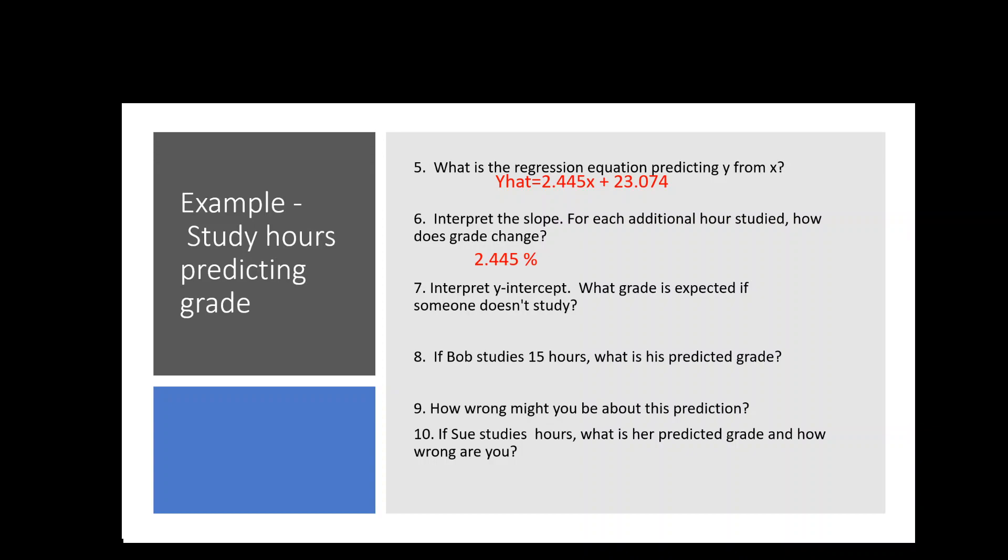Now we're going to interpret the y-intercept. So what grade can we expect if someone didn't study at all? In other words, we're going to be setting x to zero. That's the definition of our y-intercept. So we're basically saying you would get roughly about 23.074% on the test. Do you see how we are interpreting these numbers one by one?